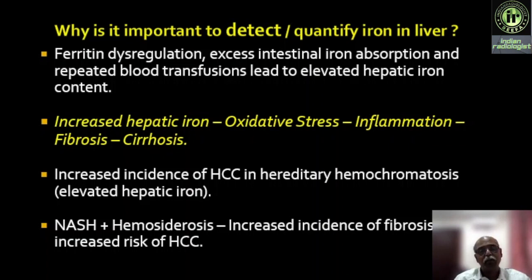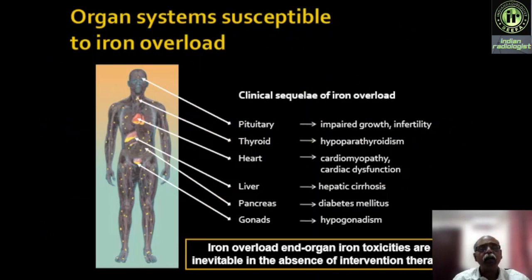As it is, NAFLD can bypass CLD and directly develop HCC. If you add hemosiderosis to it, it is a deadly combination. Increases in HCC can also occur in hereditary hemochromatosis because of elevated hepatic iron content. The organ systems susceptible to general iron overload are pituitary, thyroid, heart, liver, pancreas, and gonads.